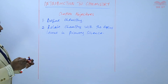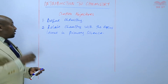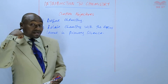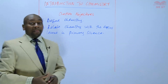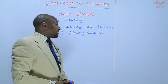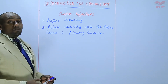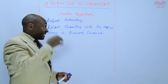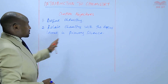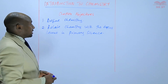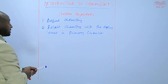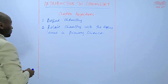In primary science, chemistry is not offered as a subject — the subject is offered broadly as science. So it is important to relate chemistry with the science that was learned at primary level.